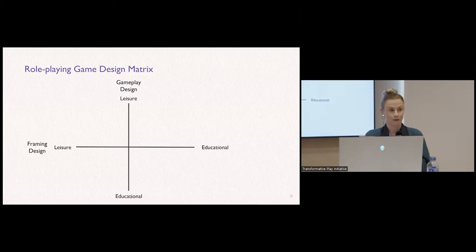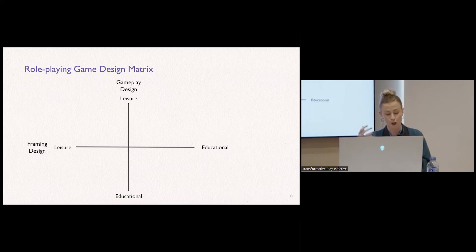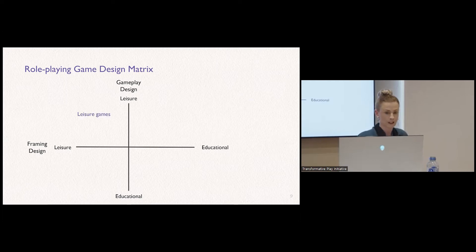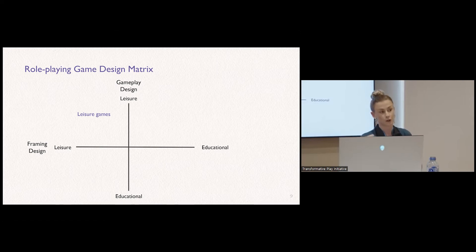Both gameplay and framing can be designed either for leisure purposes or for educational purposes. 'Leisure' means you do not design for any specific learning objectives. This doesn't say anything about whether participants know the purpose — this is about the design process. In the top left corner we have leisure games, where you design both the gameplay and the framing for leisure use. This means you can have a debrief with emotional processing and intellectual processing, but no educational processing. For example, maybe you designed a game about being stranded on an island while camping.